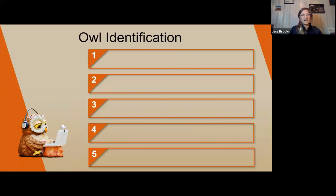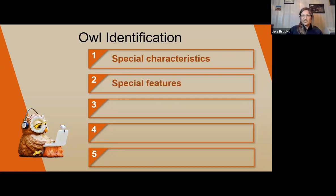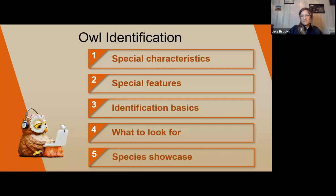So we are going to be talking about owl identification. We will be showcasing seven species that are common to Nevada — some are found all over North America, South America, and even the world. We'll be looking at special characteristics first, special features, identification basics, and what to look for. Those are four main key things to look for when out birding. We'll also do some species showcases.